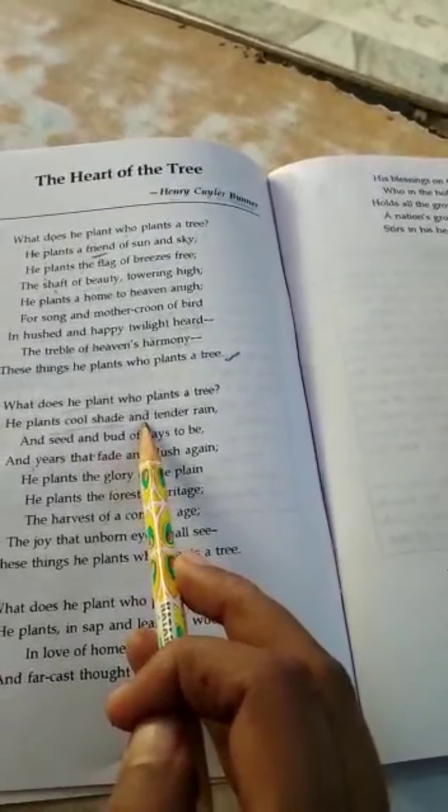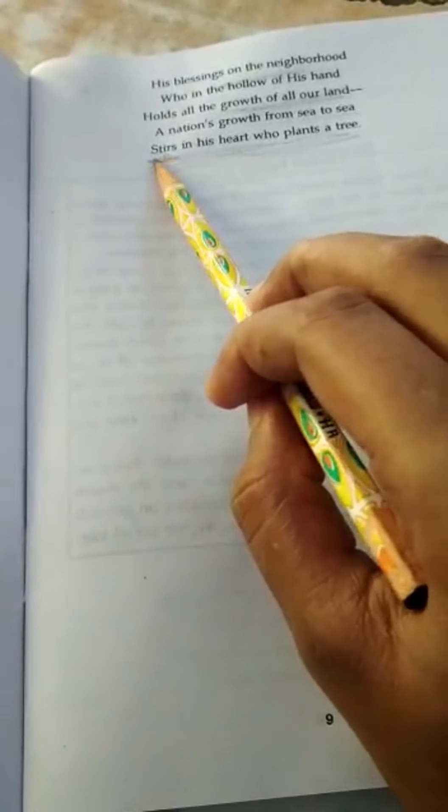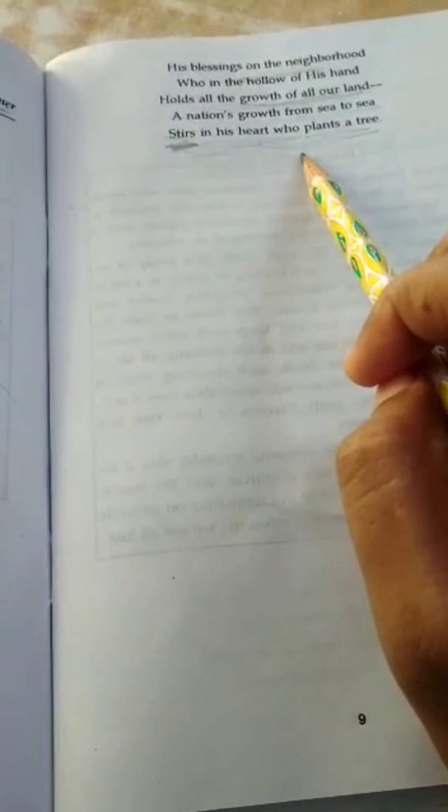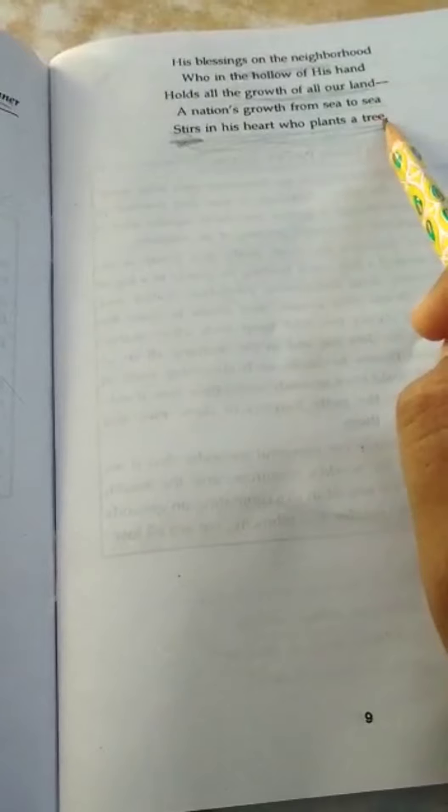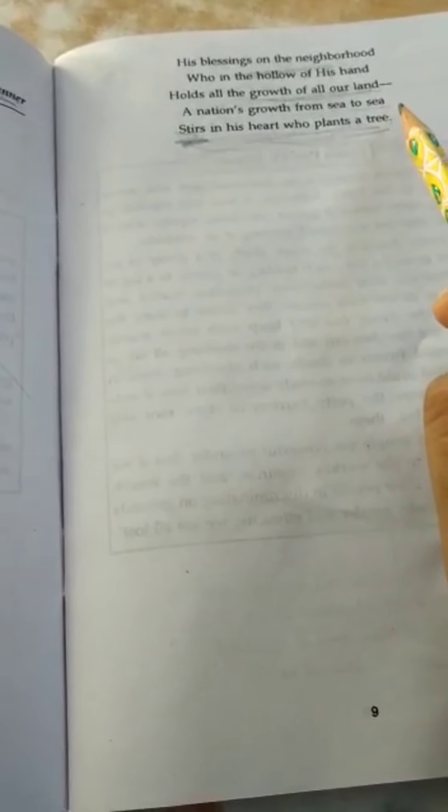A nation's growth from sea to sea, means he says that a nation's growth is in his hand. Nation's growth means from one end to the other end, the whole nation, nation's growth is there in his hand, when he plants a tree. Stirs in his heart, who plants a tree, means he feels extremely happy when he plants a tree, because he knows that he is planting a tree just for the whole humankind. The feeling of common welfare is there in the heart of the man who plants a tree.